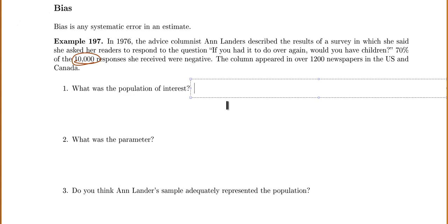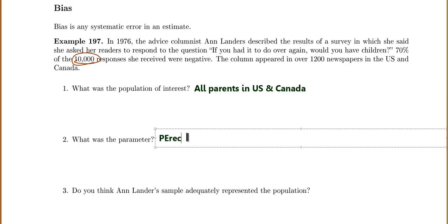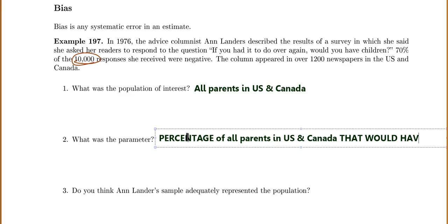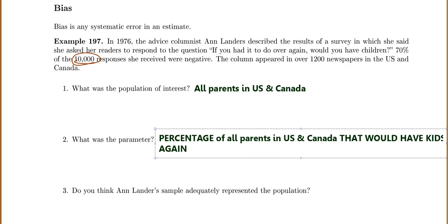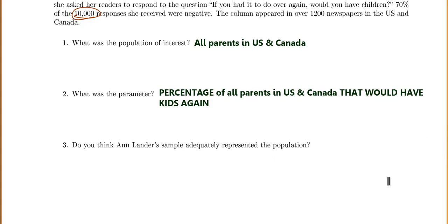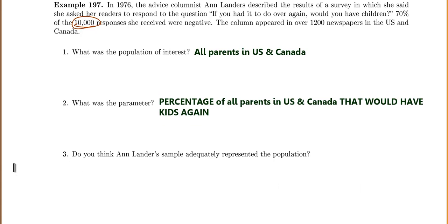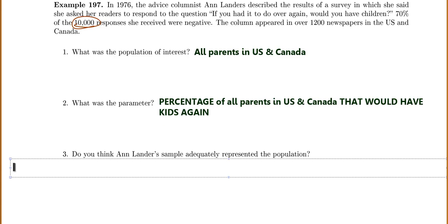The population of interest was all the parents in the U.S. and Canada. The parameter is the percentage of all parents in the U.S. and Canada that would have children again. But Ann Landers' sample does not represent the population.